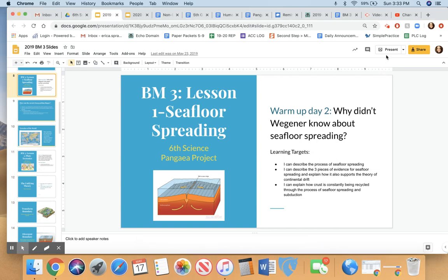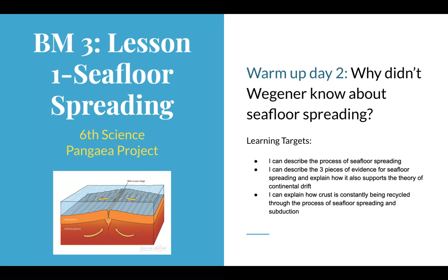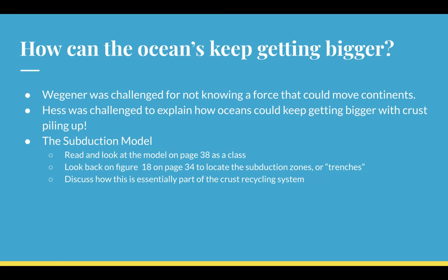Welcome back for our second lesson in benchmark 3. I'm going to quickly wrap up seafloor spreading from lesson 1. Remember, seafloor spreading was found in the 1960s when scientists mapped the ocean floor and discovered it wasn't a flat wasteland — there were mountain ranges where crust was being torn apart. Wagner was challenged by his peers because he couldn't explain a force that could move continents. We know magma beneath the crust may move via convection currents that could push or pull on the plates.